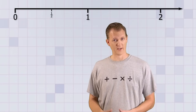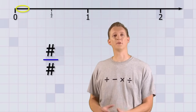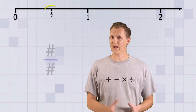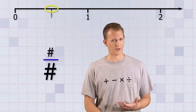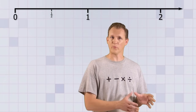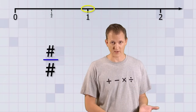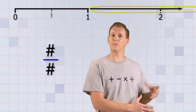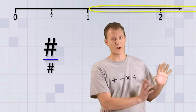Our journey showed us some pretty useful regions of the number line: the region near 0, where the top number is much smaller than the bottom number; the region near 1 half, where the top number is about 1 half of the bottom number; the region near 1, where the top number and bottom number are about the same; and the region past 1, where the top number is bigger than the bottom number, and it keeps on going forever.